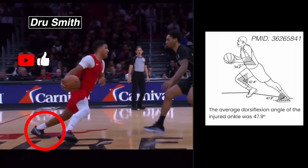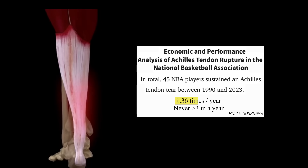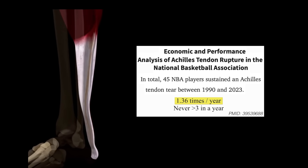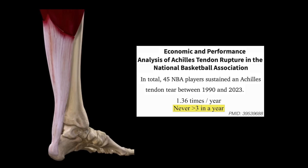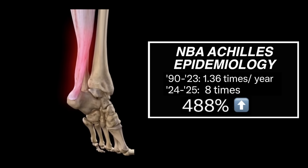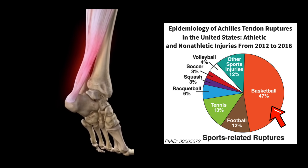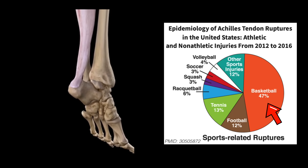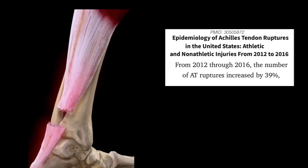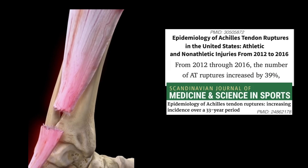Restriction or thickening in these fascial planes from scar tissue, overuse, or poor mobility increases risk of injury. During false steps, data suggests that if the angle between the tibia and the foot is smaller than 48 degrees, there's a strong association with heightened Achilles injury risk. NBA data shows Achilles ruptures were occurring approximately 1.36 times per year between 1990 and last year, with no year having more than three. Flash forward to this year — we had eight, a 488% increase. One of the largest U.S. studies on Achilles ruptures found that basketball causes around 47% of all Achilles injuries in athletes under 60, and also showed a statistically significant 39% rise in ruptures over just four years.